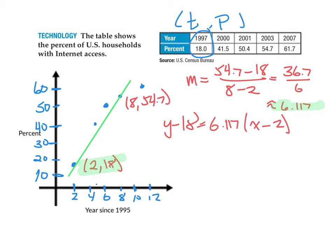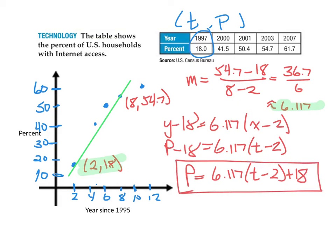Now, of course, we didn't use x and y as our variables. Instead, we used t and p, where the percent, p, was like our y-coordinate. So, we have p minus 18 is equal to 6.117 times t minus 2. And just to clean up a little bit, I'm going to add 18 to both sides. So, we have p equals 6.117 times t minus 2 plus 18. And this would actually be a good prediction equation.